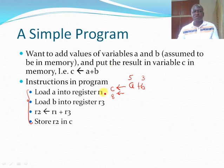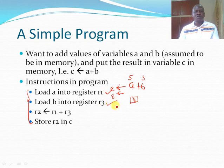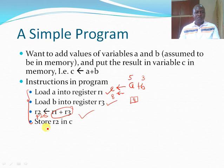Here is a piece of assembly code depicting how such an operation is carried out. The first instruction says 'Load A into register R1' — so the processor loads the content of memory location A into register R1. The second instruction loads the content of memory location B into register R3. The third instruction performs the add operation and stores the result in register R2. The last instruction writes the content of register R2 into memory location C.